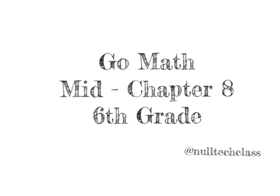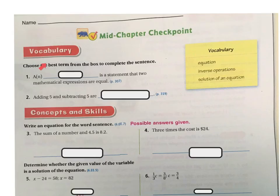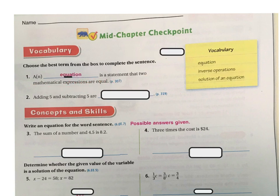Good morning. Today's lesson is the mid-chapter checkpoint for chapter 8. Choose the best term from the box to complete the sentence. So there's our terms. A blank is a statement that two mathematical expressions are equal — that would be an equation.